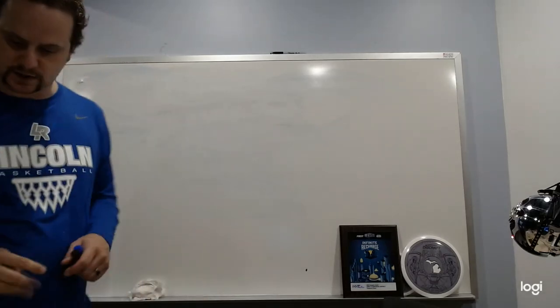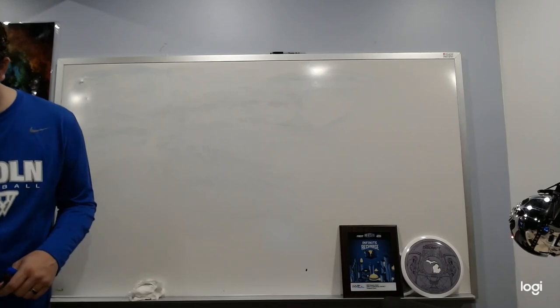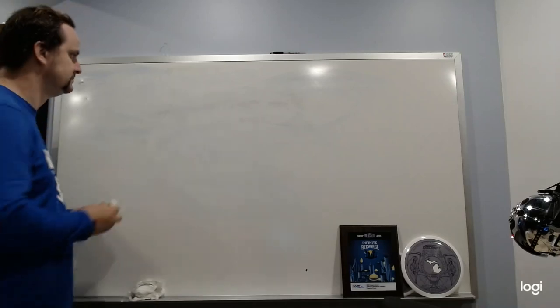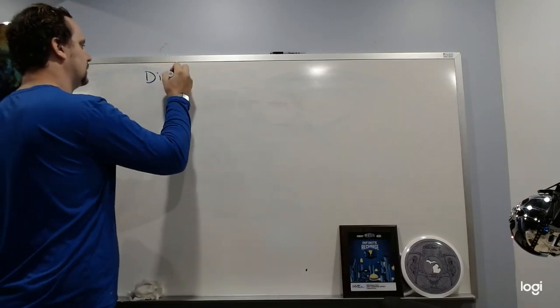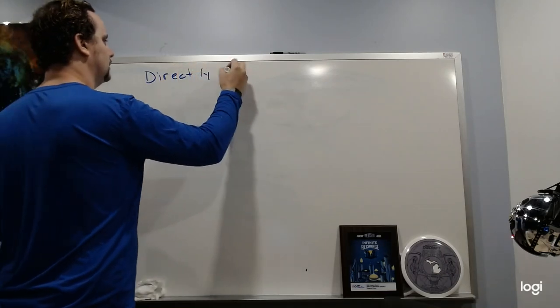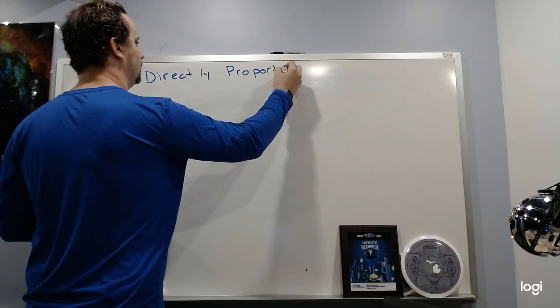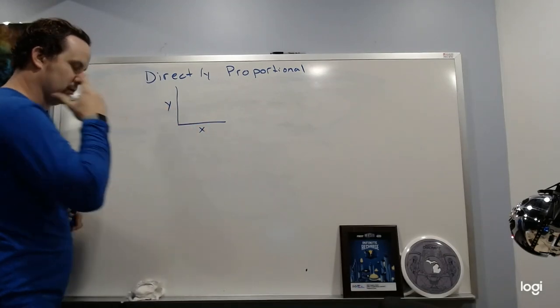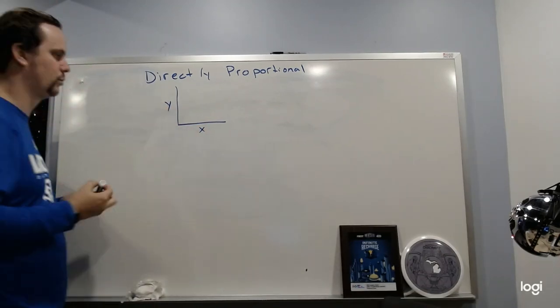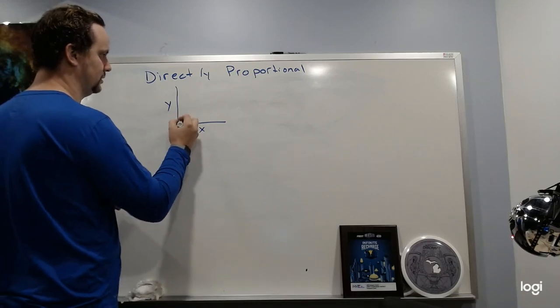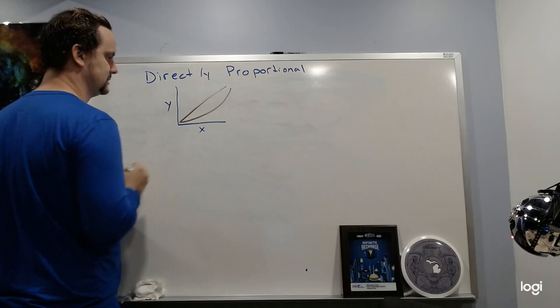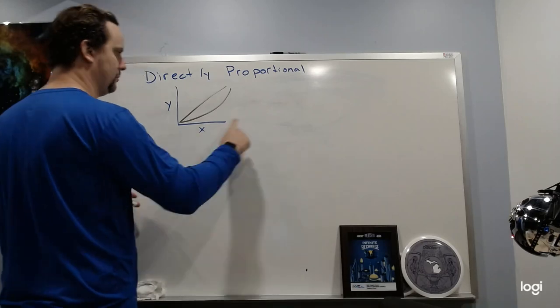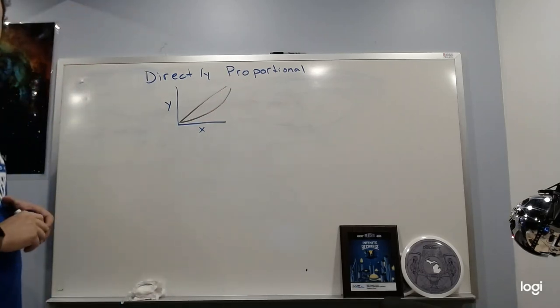One other thing that I want to talk about is directly proportional and inversely proportional. Let's go: directly proportional. That's when you have a relationship where both are going up. So as X increases, Y also increases. It could look something like this or like this. Either way, both are going up. It's going up more and more and more, left to right.